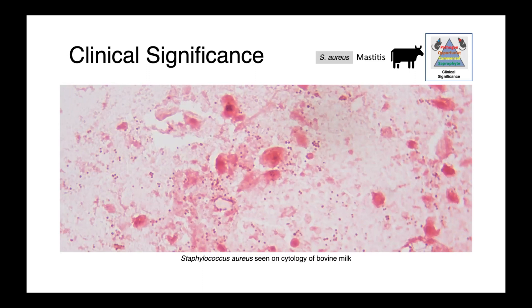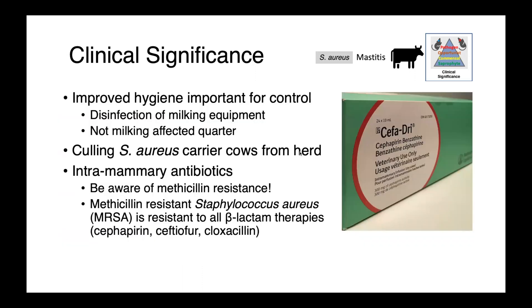Because Staph aureus is able to colonize cattle, improved hygiene is really important for control of spread. Disinfecting milking equipment and not milking the infected quarter are important management strategies. For chronically infected animals, culling Staph aureus carriers is possible, and in some cases intramammary antibiotics are also used. However, for Staphylococci in general, we need to be aware of antimicrobial resistance. Methicillin resistance is very problematic — MRSA, or any methicillin-resistant Staph species, is resistant to all beta-lactam therapies, including cephapirin, ceftiofur, or cloxacillin, which may be commonly used in agricultural practice.